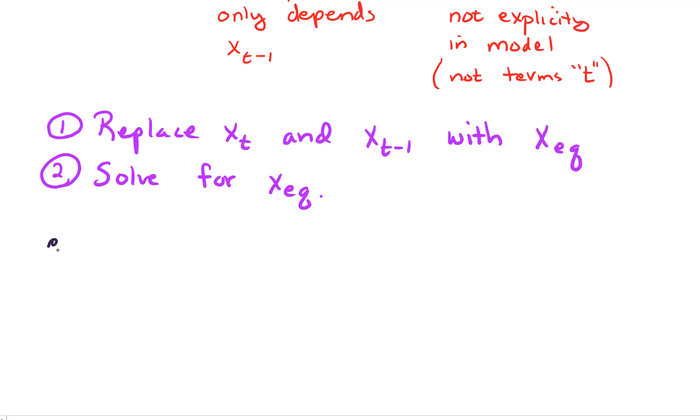Okay, I'd like to do two examples. So example 1. Let's find the equilibrium points for x sub t equals 3 times x sub t minus 1 minus parentheses x sub t minus 1 all squared. Okay, so step 1 is to replace all these x terms with x sub eq.